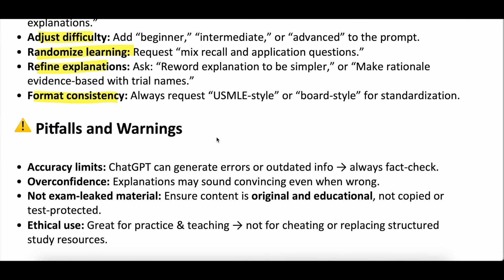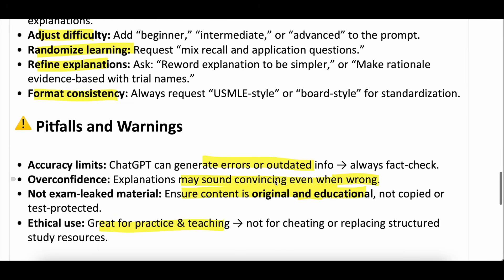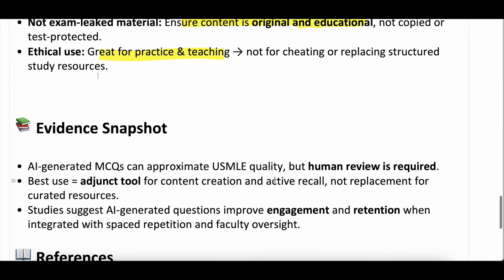Pitfalls and warnings: ChatGPT can generate errors and you've got to be careful. Explanations will always sound convincing even if they are wrong — it will never say 'we're not sure on the answer.' Don't plagiarize any exams. It's great practice for teaching and learning, but structured study resources are currently the only way to make sure accuracy is totally dependable. AI-generated multiple choice questions are high quality in general, but human review is required unless you're okay with every once in a while a question being inaccurate. Best used as an adjunct tool, not a replacement for curated resources — although they are very expensive. AI-generated questions can improve engagement and retention, especially focused on things you've been struggling with.